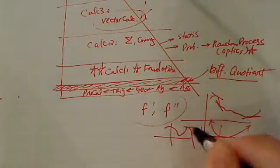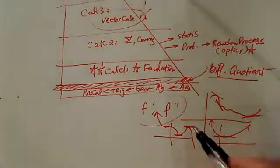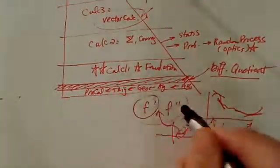for example. There's a local maximum here and local minimum here. In order to find all those points, we need the derivatives.